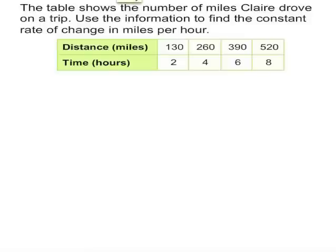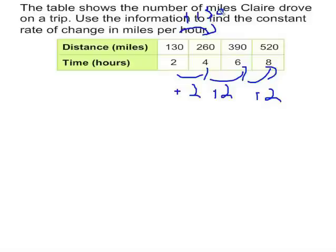So, the table here shows the number of miles Claire drove on a trip. Use the information to find the constant rate of change in miles per hour. So given a table like this, if you are having difficulty calculating your jumps from one value to the next, you can certainly rewrite your table. But I'm going to use it as is. So I know that I'm looking at an increase of 2 hours each jump. And I know that to go from 130 to 260, that's an increase of 130. From 260 to 390, that's an increase of 130. And to go from 390 to 520, that's an increase of 130.